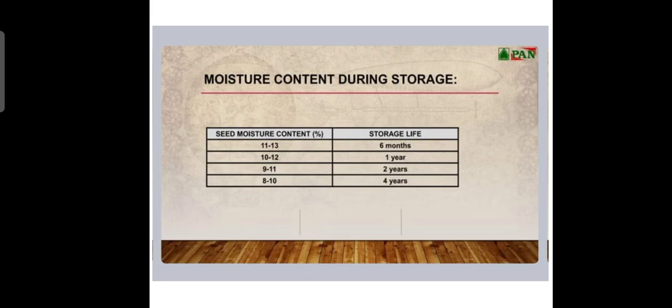Seed moisture content percentage and storage life: for 6 months, seed should have 11-13% moisture, for one year 10-12% moisture, for two years 9-11% moisture, and for four years 8-10% moisture. The longer you store the seed, the lower the moisture percentage should be.